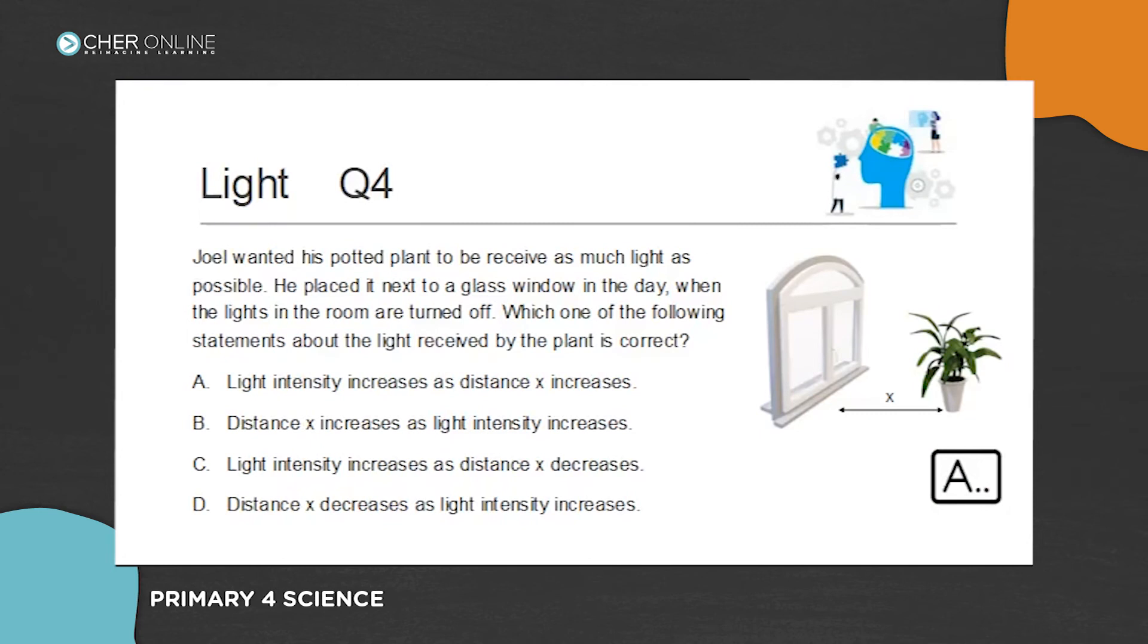Joel wanted his potted plant to receive as much light as possible. He placed it next to a glass window. When the light in the room was turned off, which of the following statements about the light received by the plant is correct? Light intensity increases as distance X decreases. When distance X decreases, we are actually putting the plant closer to the window. The light source comes from the window because he turns off the light in the room.